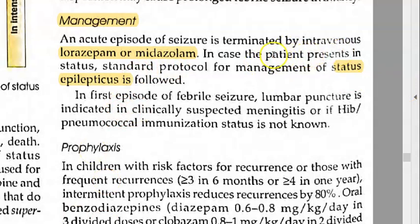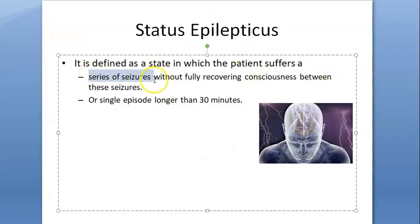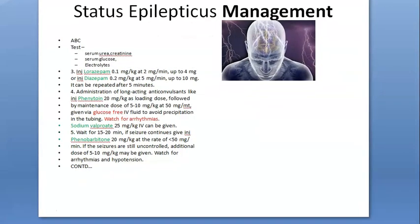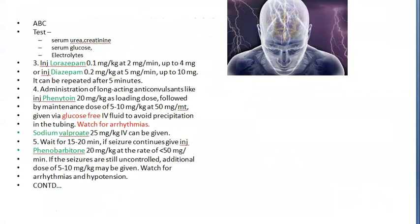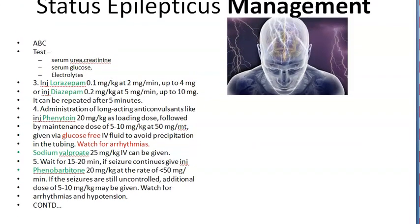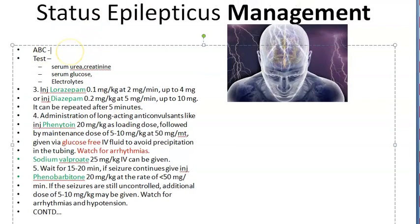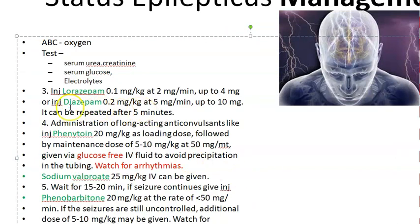If the patient presents in status epilepticus, you will follow the status epilepticus protocol. Status epilepticus is a series of seizures without fully recovering consciousness between them, or if a single episode lasts greater than 30 minutes. How do you manage it? First, airway, breathing, circulation — give oxygen. Then take tests: urine, creatinine, urea, glucose, electrolytes. Then give lorazepam, midazolam.